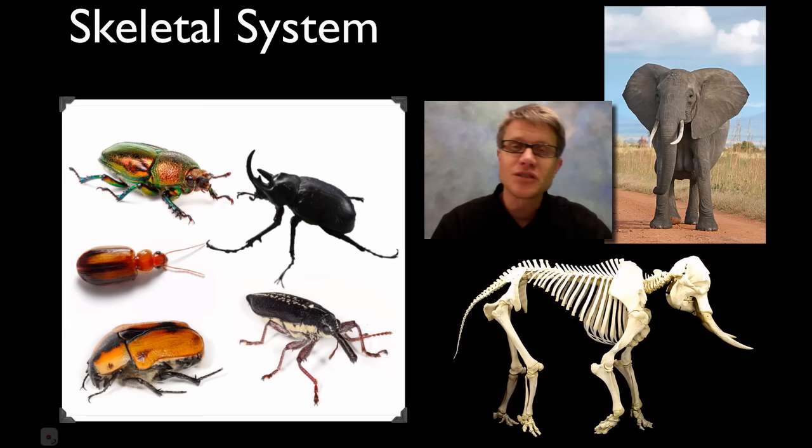Hi. It's Mr. Ray Anderson and in this podcast I'm going to talk about the skeletal system. Before we get to the human skeletal system, you should know that there are two different types of skeleton. We could have an exoskeleton — in other words, we could have our skeleton on the outside, like we find in these beetles.